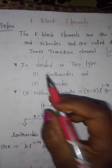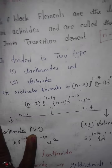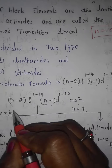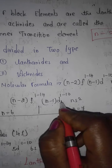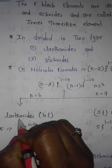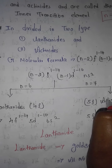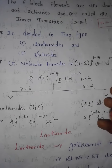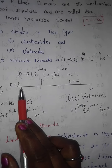The general formula for f-block elements is: (N-2)F 1 to 14, (N-1)D 1 to 10, Ns2. They are classified in two ways: lanthanides and actinides. Lanthanides are the 4F series and actinides are the 5F series, so N equals 6 and N equals 7 respectively.